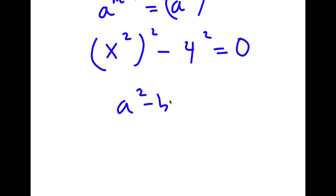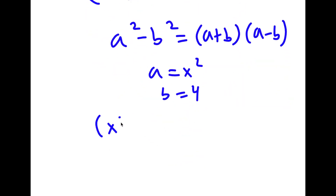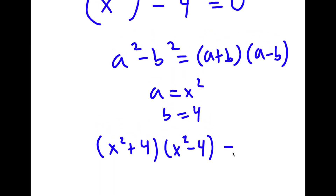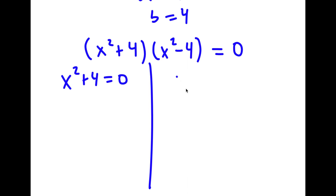Now if I have something in the form a squared minus b squared, this is equal to (a plus b) times (a minus b). In this case, a is x squared and b is 4. So I have (x squared plus 4) times (x squared minus 4) is equal to 0. This gives me two equations: x squared plus 4 equals 0, and x squared minus 4 equals 0.